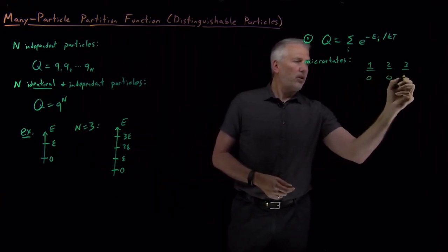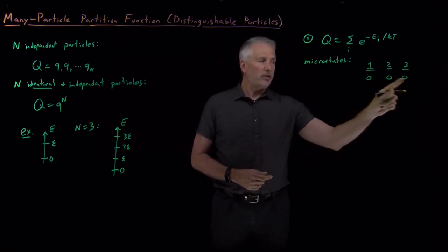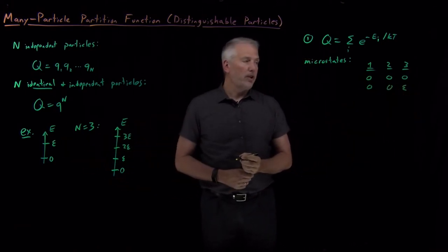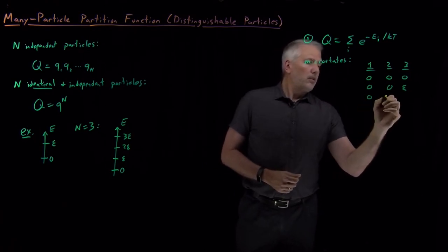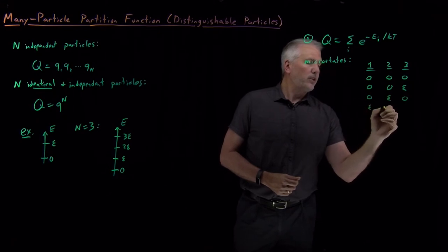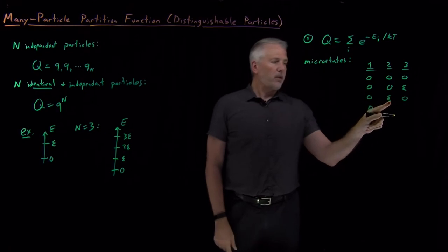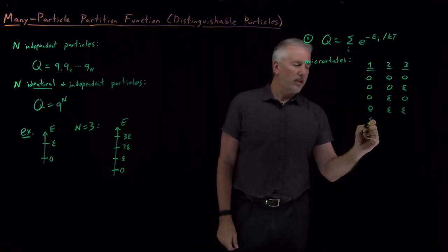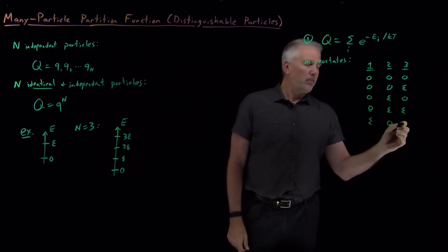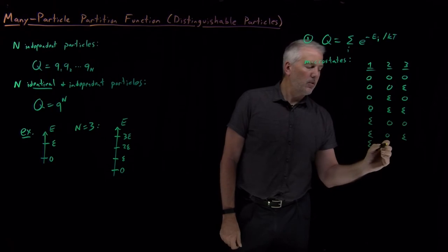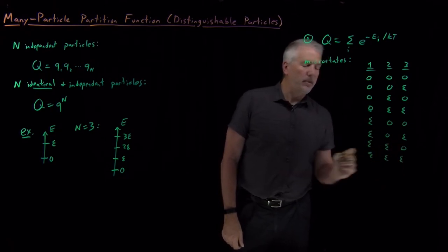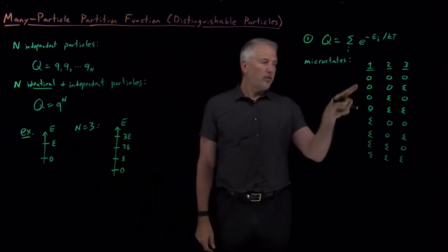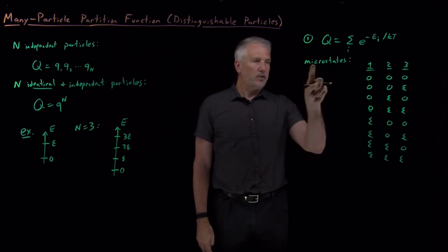So, all three molecules could be in the ground state with energies zero, zero, and zero. Or the third molecule could be in the upper state with energy epsilon, or the second molecule could be in the excited state, or both of those two could be excited. I can also consider the first molecule in the upper state with both others in the ground state, or with one of them excited, or the other excited, or all three in the excited state. Those are all eight different ways of putting three molecules in two energy levels — two times two times two different microstates.